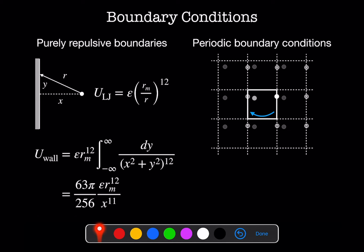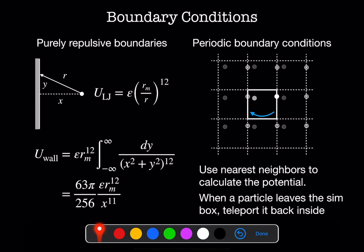With these periodic boundary conditions, the two steps we need to do is find the nearest neighbors of the system. So translating one simulation box to the right, to the left, to the top, and to the bottom, and use those neighbors to calculate the potential acting on any particle. The other thing is that anytime a particle leaves a simulation box, we're going to teleport it back inside like this.